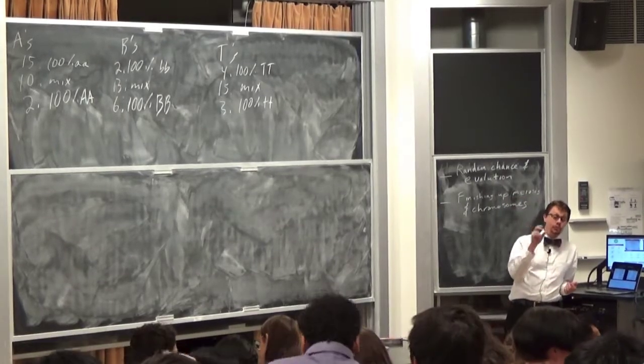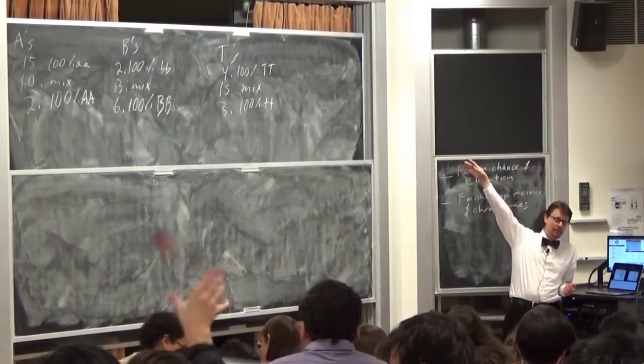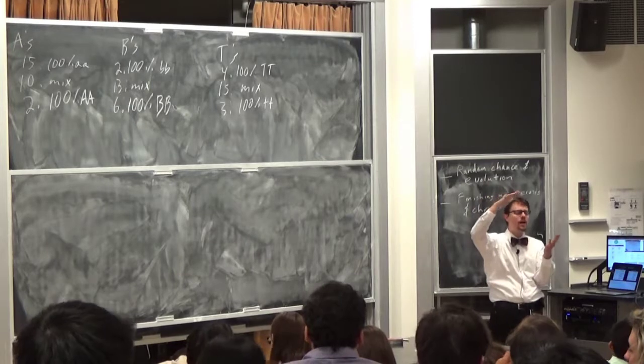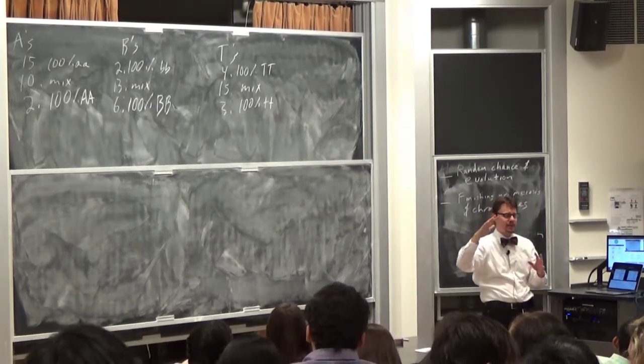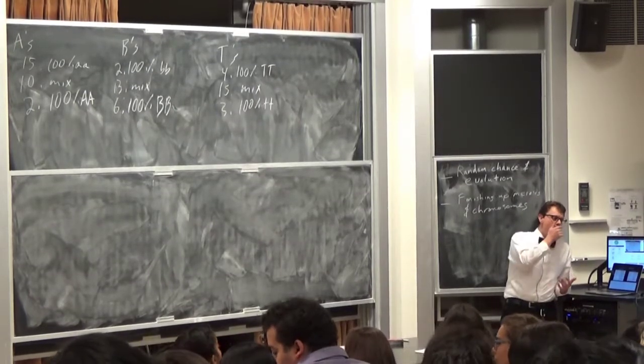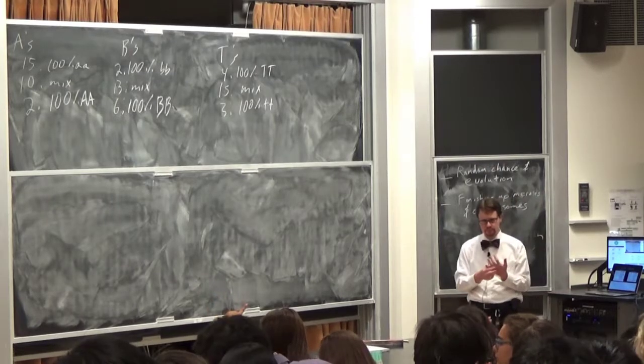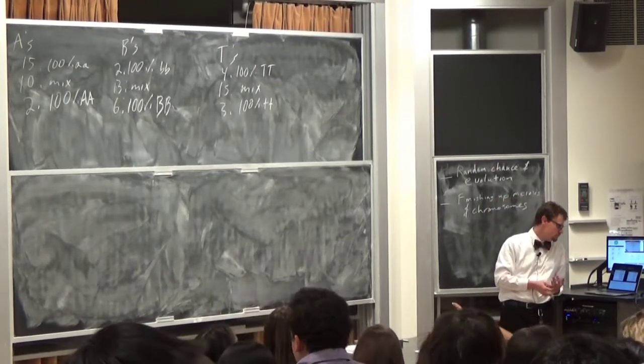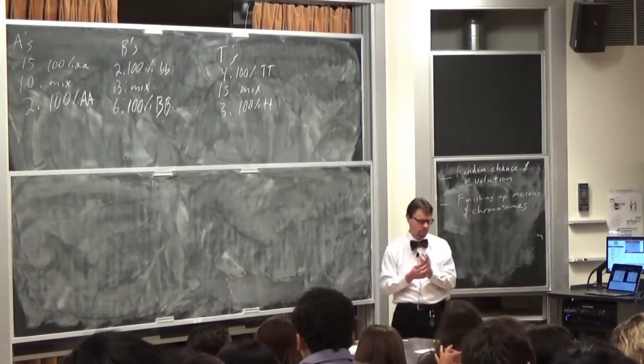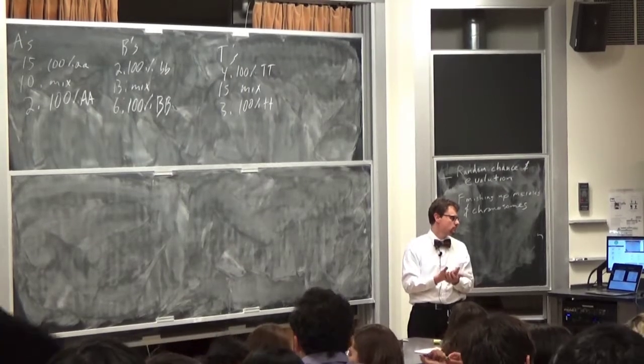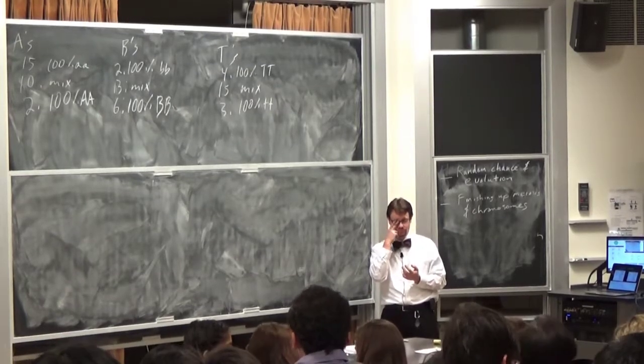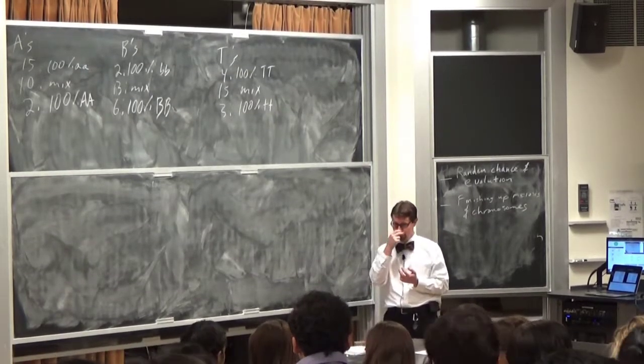And one other thing to discuss is if we had done this with 200 people of each type and the population has stayed in a group of 400 in size, then what would you expect would happen in that case as compared to this case with a small population?